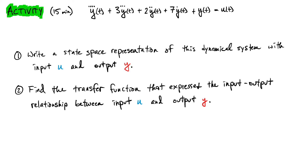Given that the input is U and the output is Y. The transfer function means that you'll be solving for capital Y of S in terms of U of S, and the state space representation means that you're going to be forming A, B, C matrices where the output Y is indeed your output. So take a few moments, solve that out, and then we'll go through my solution.